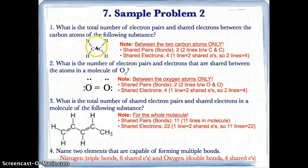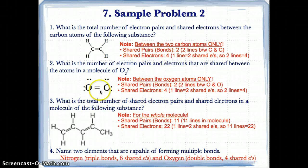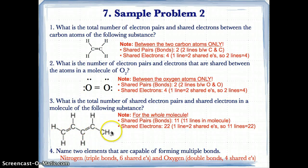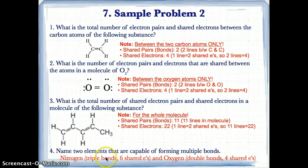For sample problem number one, counting between the two carbon atoms only: we have two lines, so two shared pairs or bonds, and 2 × 2 = 4 shared electrons. For number two, between the oxygen atoms: two lines, so two shared pairs, and 2 × 2 = 4 shared electrons. For number three, counting lines in the whole molecule: 1, 2, 3, 4, 5, 6, 7, 8, 9, 10, 11 — so 11 shared pairs or bonds, and 11 × 2 = 22 shared electrons. Two elements capable of forming multiple bonds are nitrogen, which forms triple bonds (6 shared electrons), and oxygen, which forms double bonds (4 shared electrons).